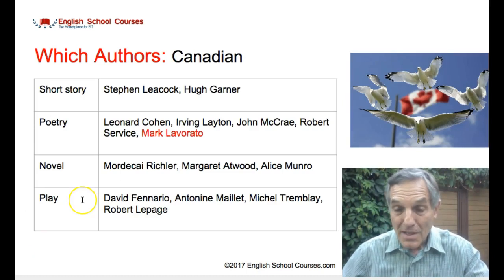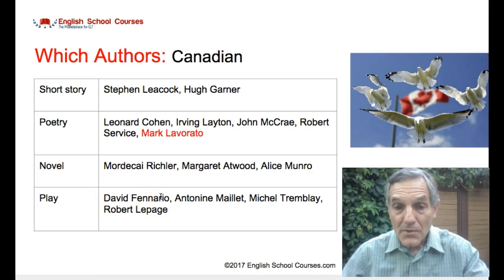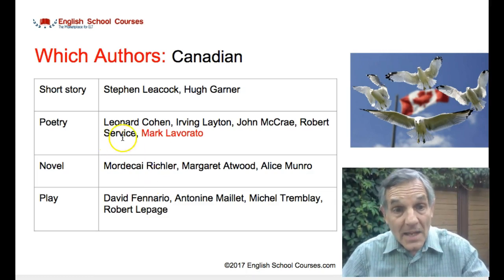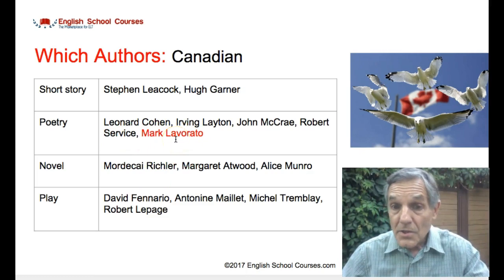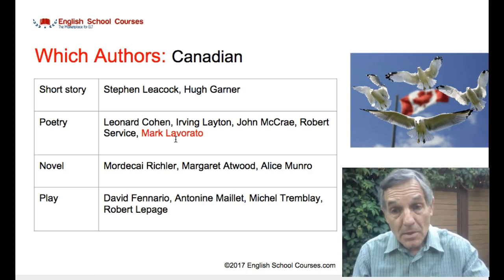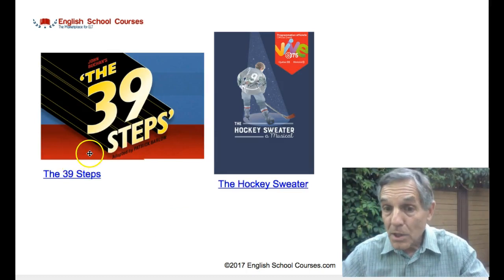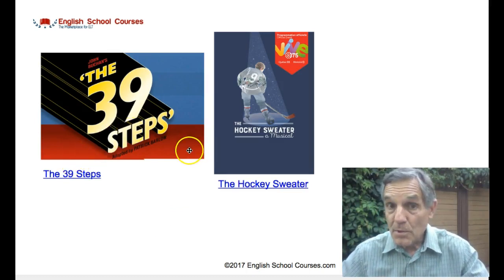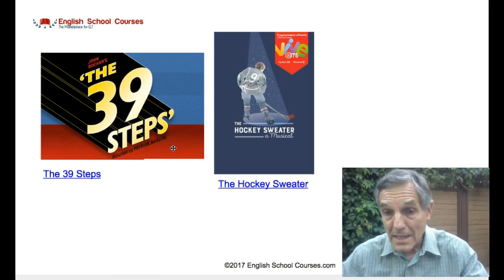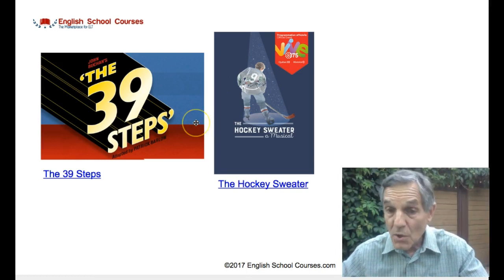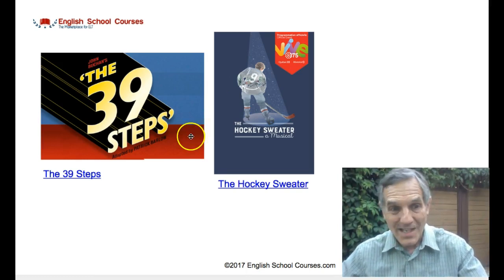Some great Canadian writers here. Did you know, for example, that Alice Munro is actually a short story writer and a novelist? She won the Nobel Prize in Literature in 2013. I've highlighted here Mark Leverado, because he's a Western Canadian poet who lives in Montreal, and I've had the pleasure of inviting him to class several times to talk to students and teachers about his own poetry, which is pretty fantastic. I take students each term to see a play, and this term we have the choice between The 39 Steps, based on Alfred Hitchcock's dramatic spy thriller, and The Hockey Sweater, a short story by Roch Carrier — a classic story. So which play would you take your students to see? You can click on the link for more information.